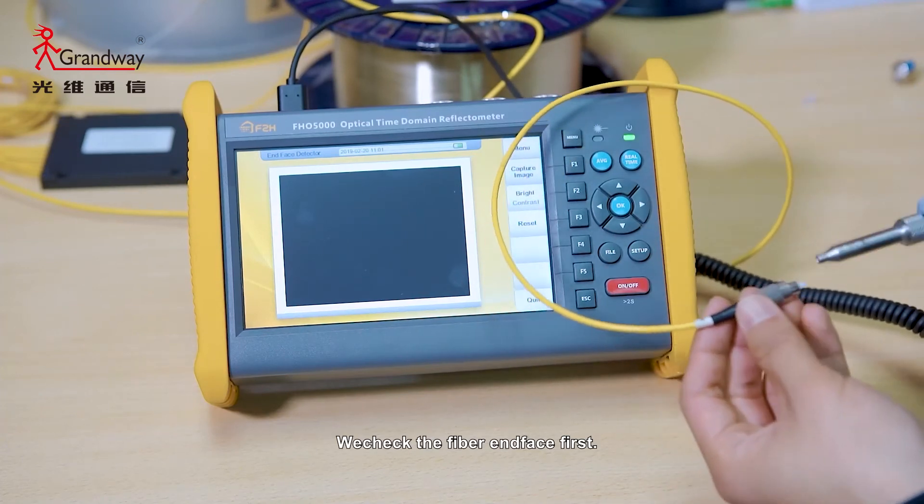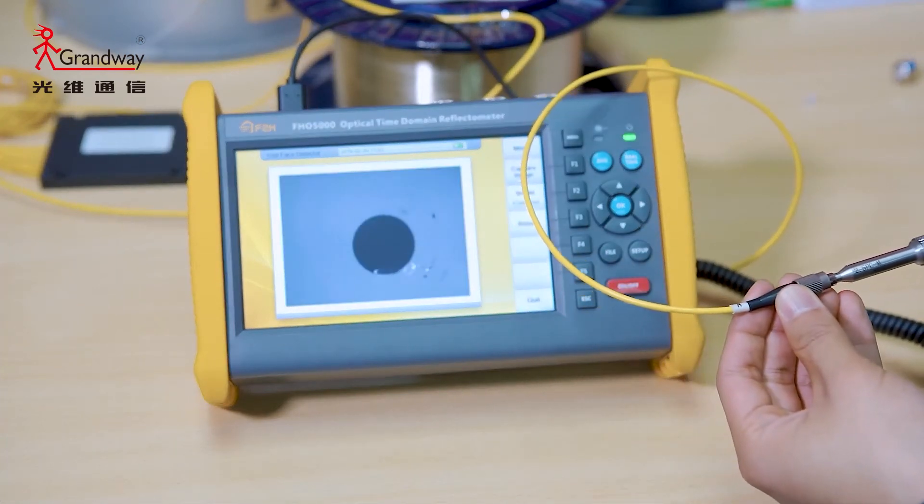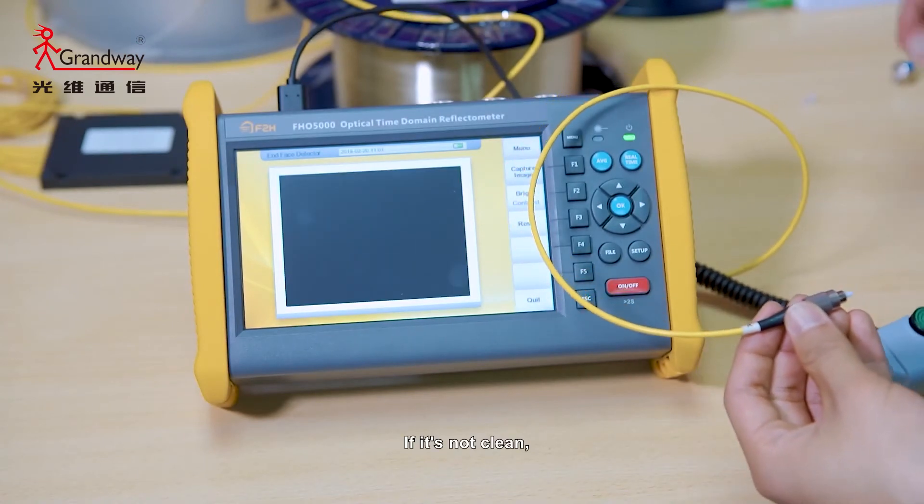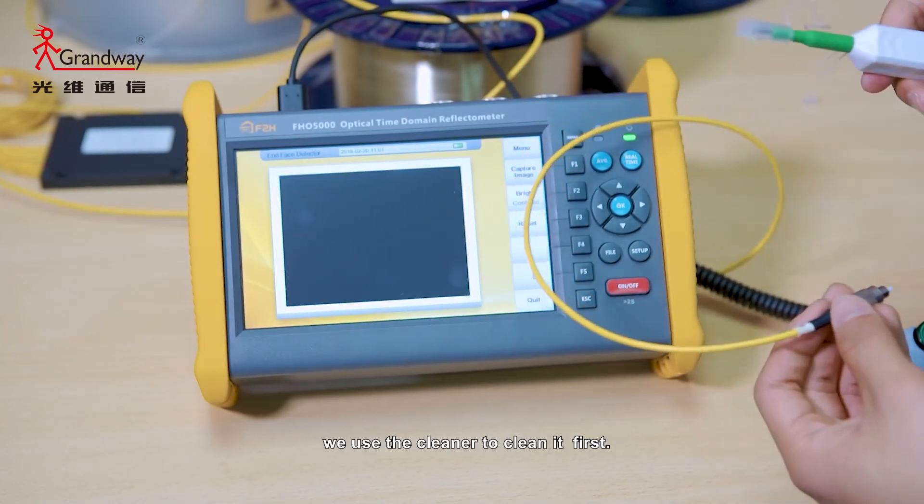We check the fiber interface first. If it is not clean, we use a cleaner to clean it first.